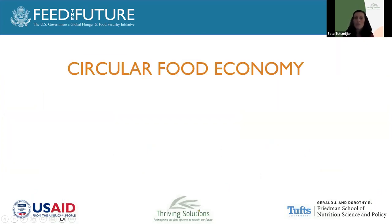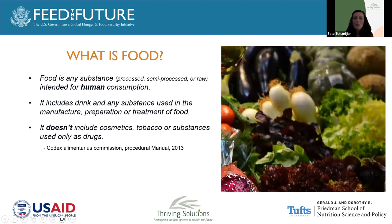Now we move to focus more towards what is a circular food economy. We start with introducing what is food — any substance, be it processed, semi-processed, or raw, that is intended for human consumption. This includes drinks and any substances used in the manufacturing, preparation, or treatment of food, but it does not include tobacco or substances used as drugs or cosmetics.